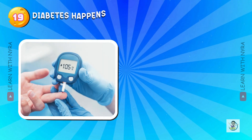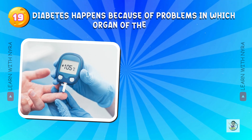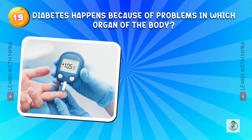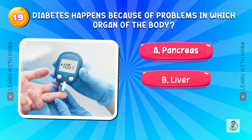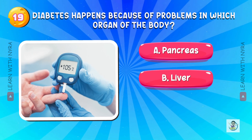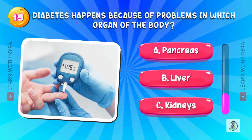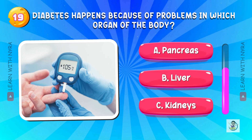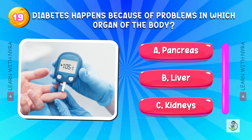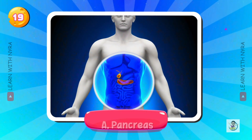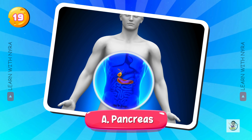Diabetes happens because of problems in which organ of the body? A. Pancreas, B. Liver, C. Kidneys. And the answer is A. Pancreas.